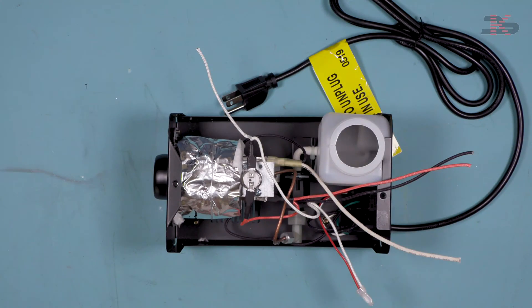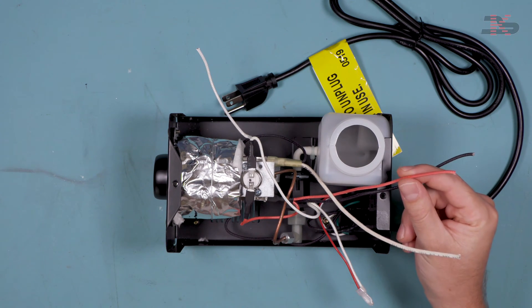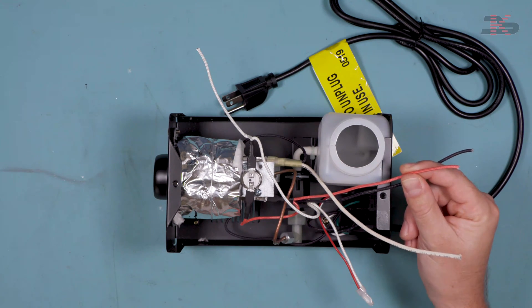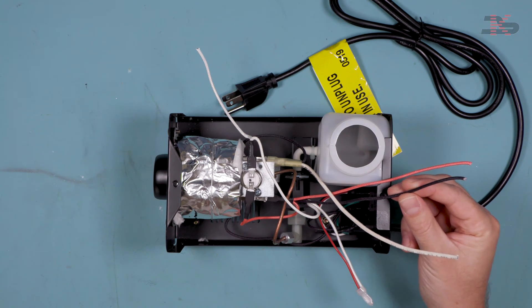Now we have three wires coming out here. We have our constant power for the timer, we have this red wire which is the constant power that's going to be used for the pump, and then we have the black wire that's going to actually lead to the pump.